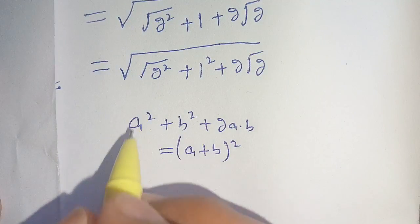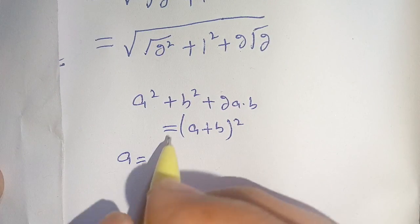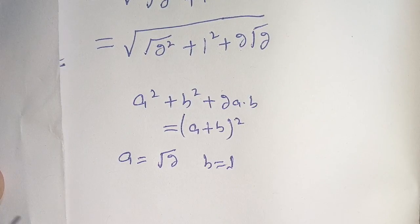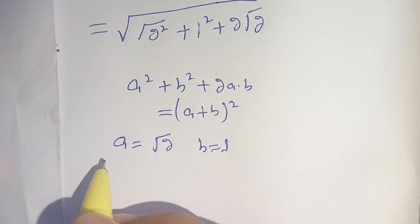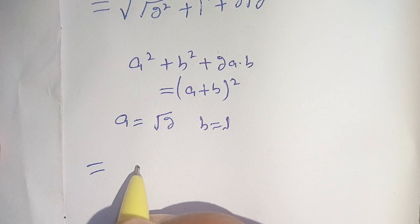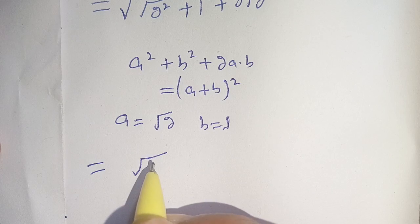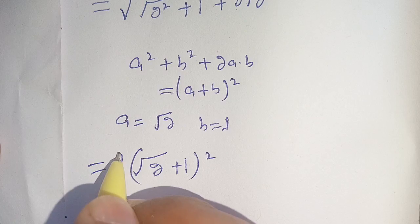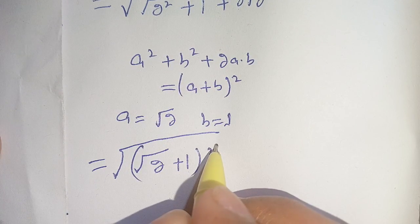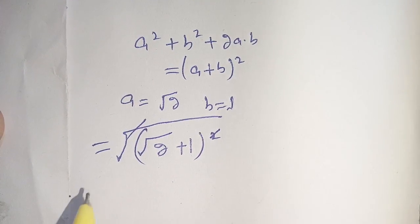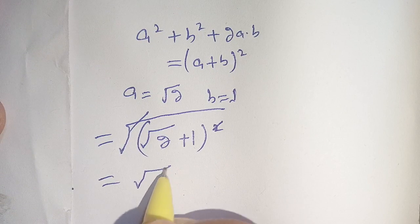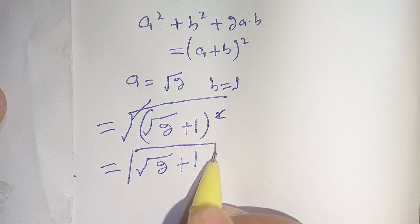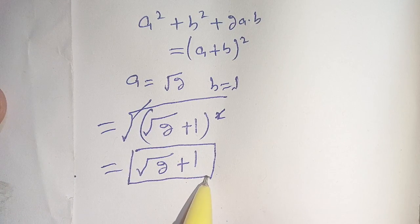Here, a is equal to square root of 2 and b is equal to 1. So we have a plus b whole square, meaning square root of 2 plus 1 whole squared under the outer square root. We can cancel out this square by the square root, and our remaining part is square root of 2 plus 1. Thus, our final result is equal to square root of 2 plus 1.